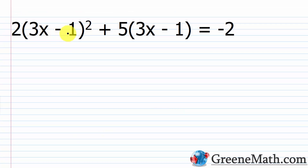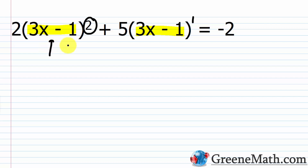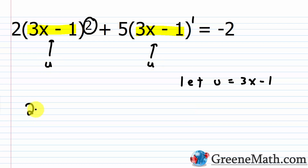Next example: 2 times the quantity (3x - 1) squared, plus 5 times the quantity (3x - 1), equals -2. This might not immediately look quadratic in form, but notice that the same quantity (3x - 1) appears in both terms — once squared and once to the first power. If we substitute u for (3x - 1), we can solve using the quadratic form. So let u equal (3x - 1), giving us 2u squared plus 5u equals -2.